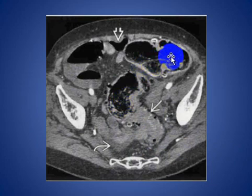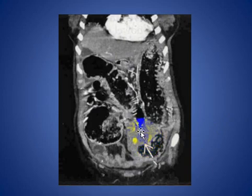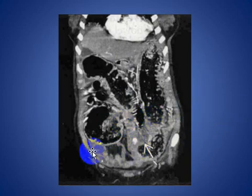The sigmoid mass causing obstruction with dilatation proximal to it and free intraperitoneal gas. The same patient shows an obstructed mass in the sigmoid with dilatation of the proximal colon, free fluid, and free fluid and air noted.